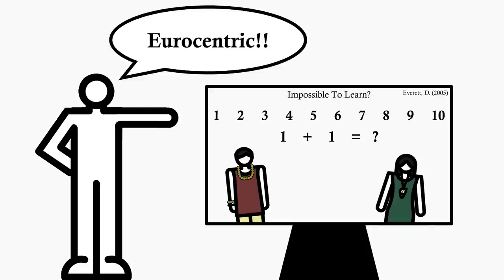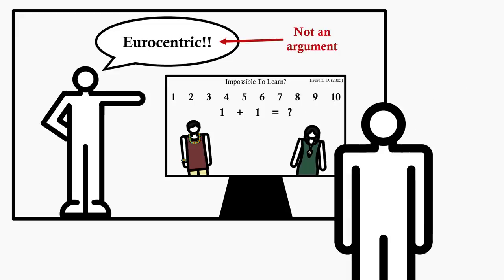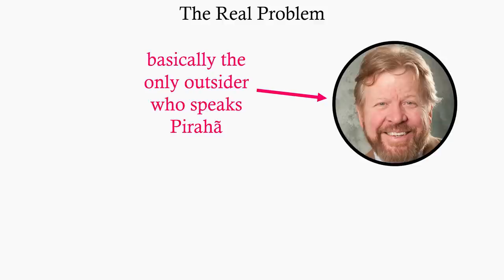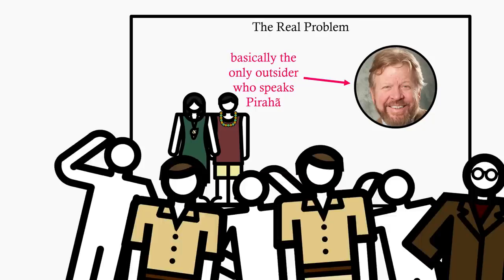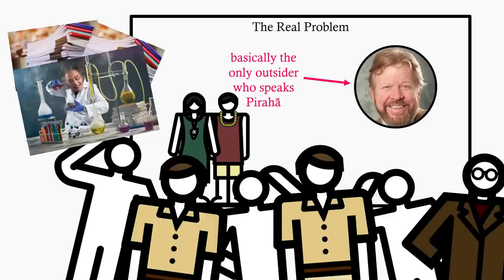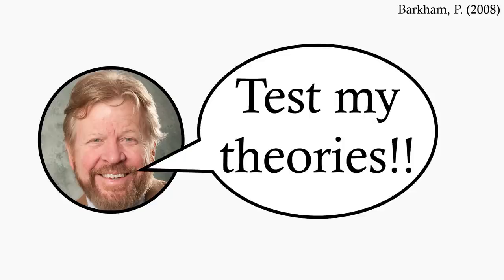Well, maybe. But just shouting 'Eurocentric' at something isn't actually an argument. Sure, it's a bias to be aware of, but it does nothing to prove Everett and Frank's studies and lab experiments wrong. The real problem here is that Everett is the guy who knows anything about the Pirahã. We need a greater range of opinions, more experts, more studies, more experiments, and Everett himself wants academics to go to the Amazon basin and test his theories.